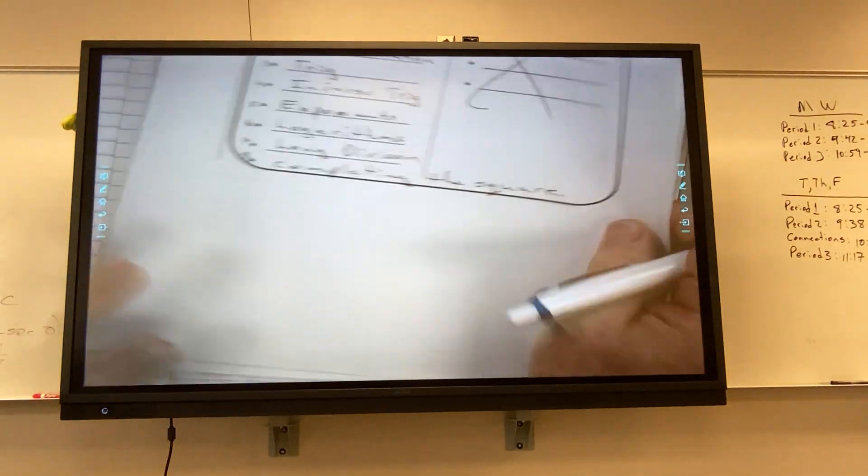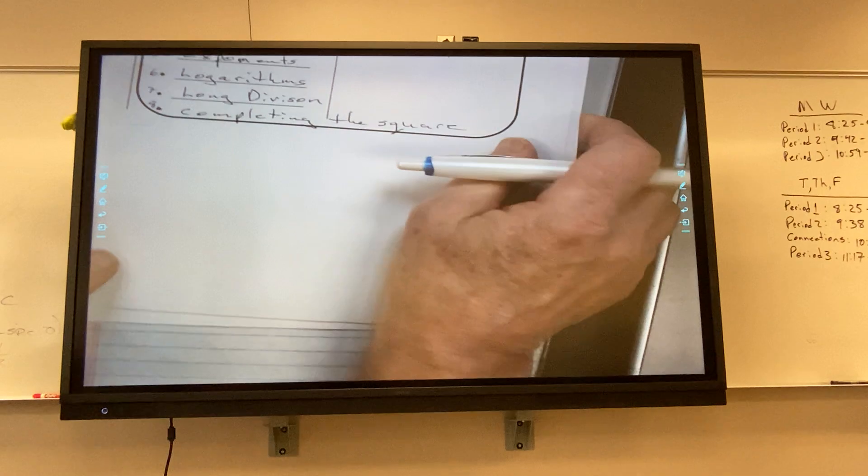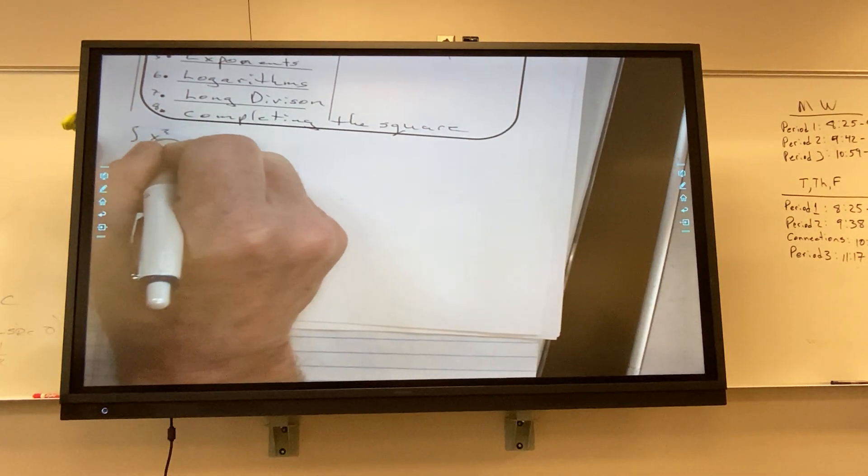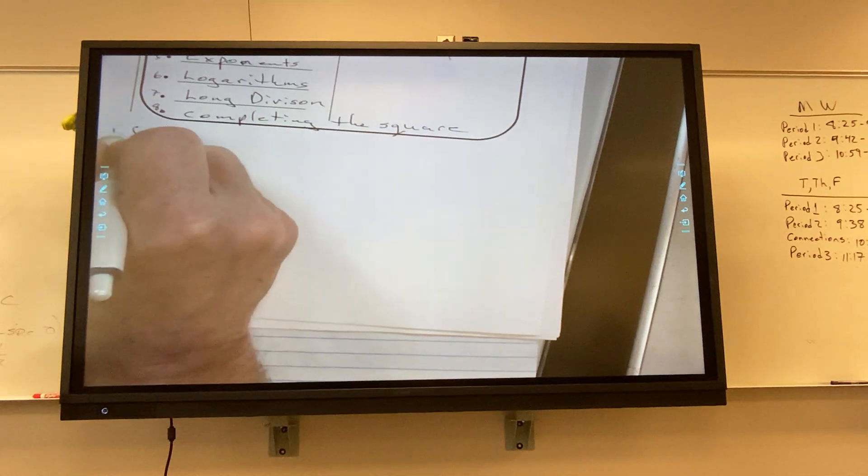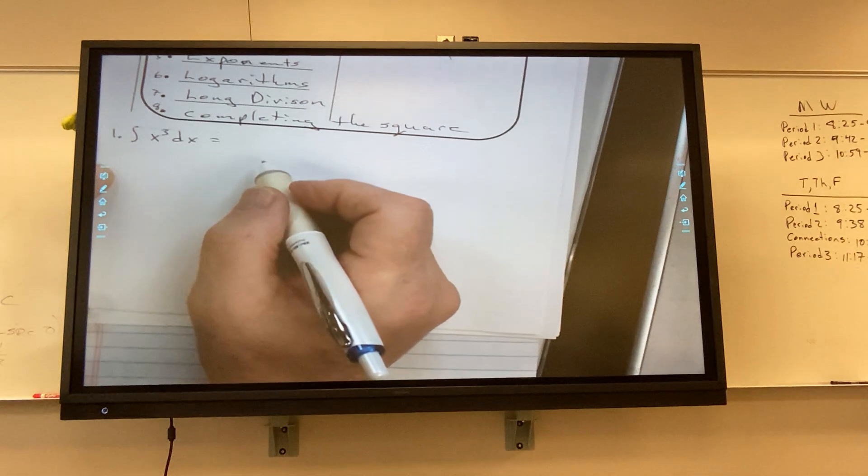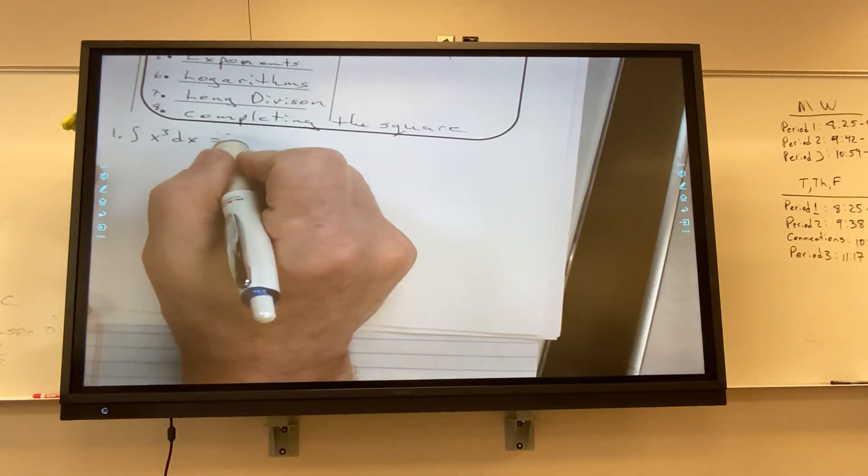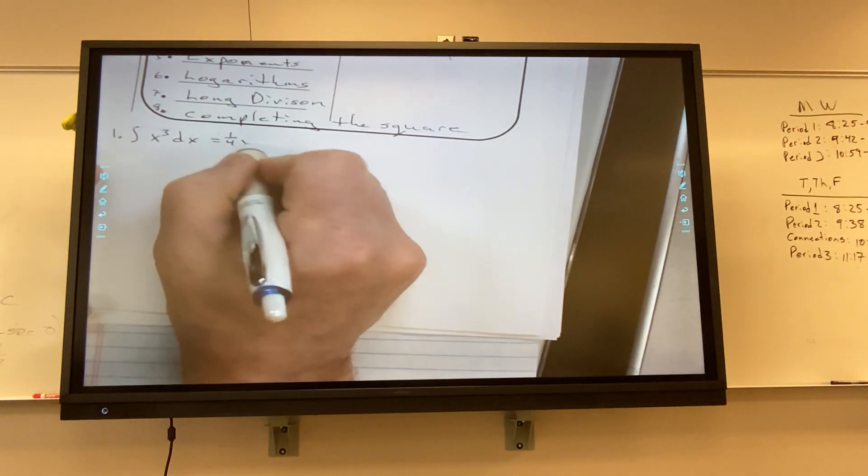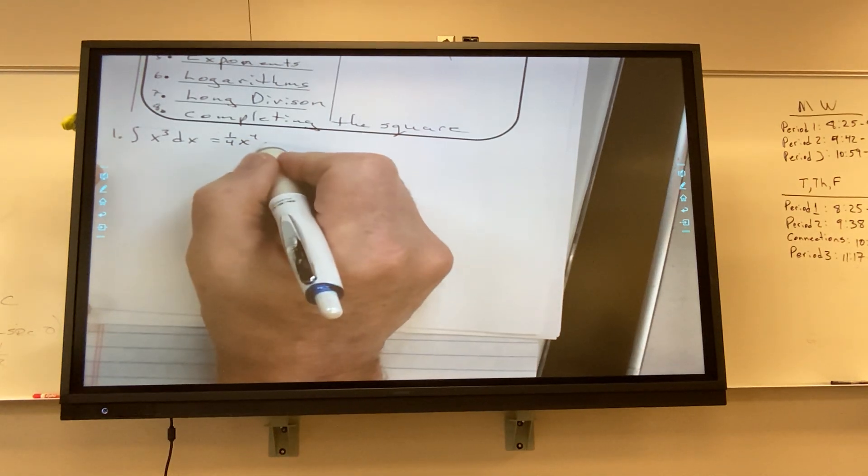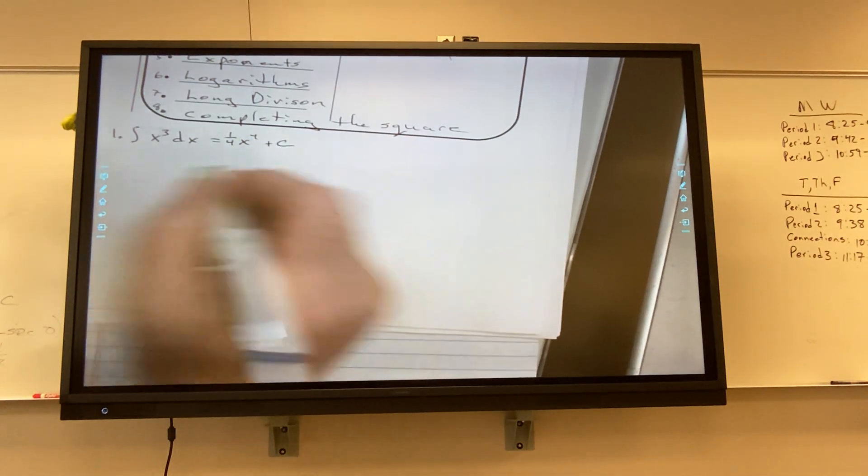And we will start with Ariana. This is number 1. So that is reverse power rule. So what do I get for an answer? I think you said to the fourth, right? Anything else? It's worth two-tenths of a point.